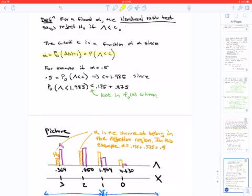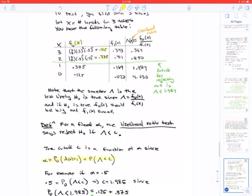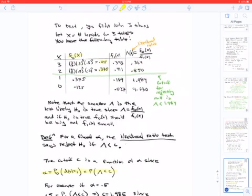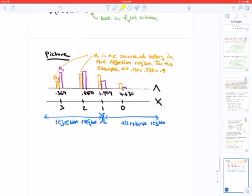Setting alpha to be 0.5, we can see that our c here has to be 1.985 because the probability under the null that lambda is less than 1.985... You have to look in column f0(x) here because that's the null distribution. Under the null distribution, we see that the probability that lambda is less than 1.984 is the sum of 0.125 and 0.375, which is 0.5. That can also be represented in this picture here.